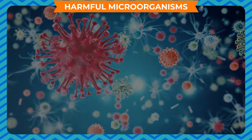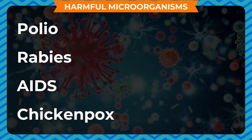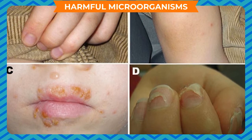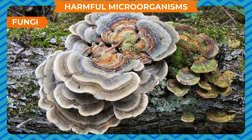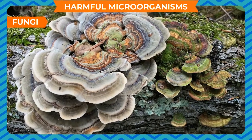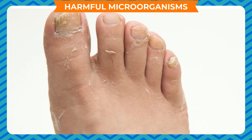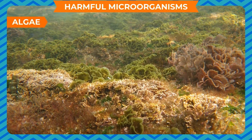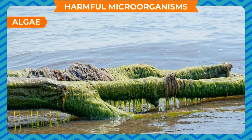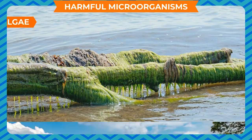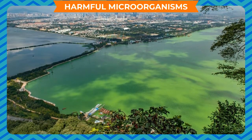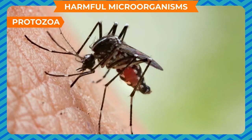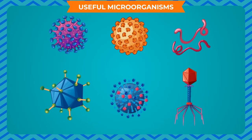Fungi are responsible for spoiling food by fermentation and cause diseases in plants like blight disease in potato. Fungi cause fungal infections such as ringworm and athlete's foot. The growth of algae in freshwater contaminates it and makes it unfit for consumption; algae growth also cuts down the supply of oxygen and sunlight to marine creatures, causing the death of marine life — a process known as eutrophication. Among protozoa, amoeba causes amoebic dysentery, trypanosoma causes African sleeping sickness, and plasmodium causes malaria.